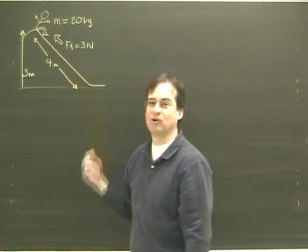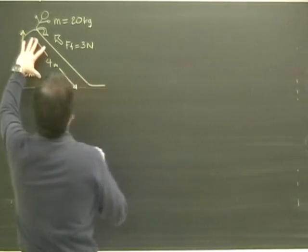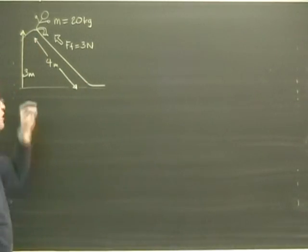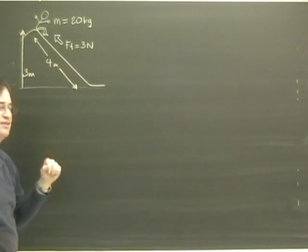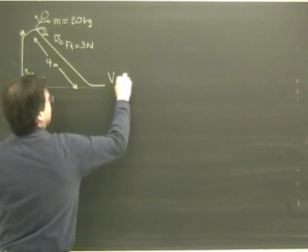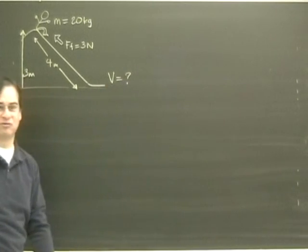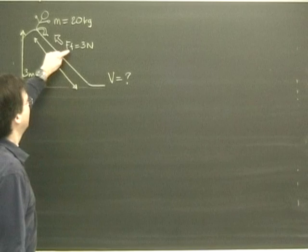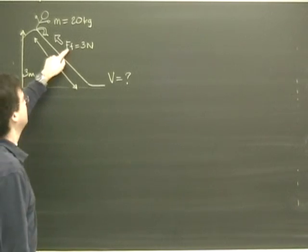So this is going to affect our total energy. We have a certain amount of energy up here, just like a roller coaster, and we're going to slide down, and some of that energy is going to be converted into kinetic energy, which is going to give us the speed that we're looking for. But the difference is I'm losing some of that energy because of this friction.